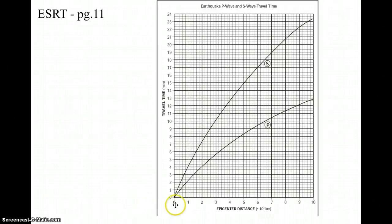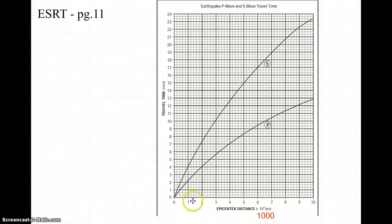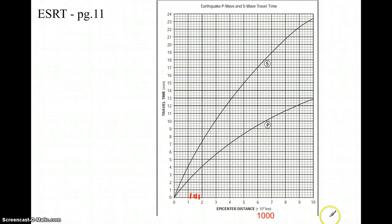Let's start with the x-axis. On the left-hand corner we have zero, and the numbers get bigger as we move to the right. These numbers represent the distance to the epicenter, and the unit is 10³ kilometers — so these numbers are actually in thousands. So this would be 1,000 kilometers from the epicenter, 2,000 kilometers, and so on. Each small line represents a distance of 200 kilometers. So if this is 1,000, then the first little line is 1,200; then 1,400; 1,600; 1,800; and 2,000.